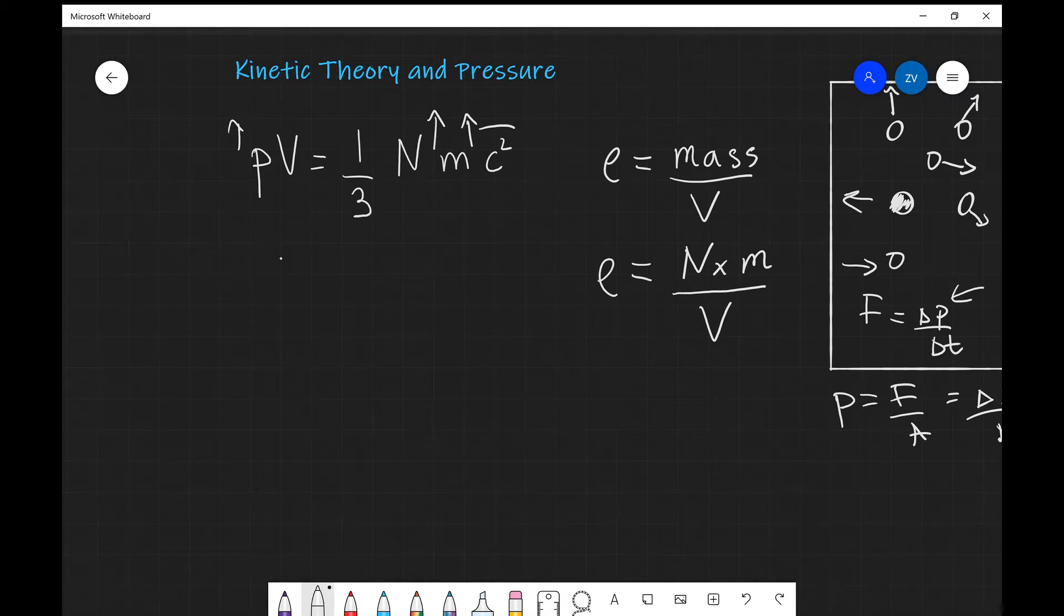Now what I'm going to do is just rearrange for V, so V is going to equal N times m divided by the density, and then what I'm going to do is substitute this back into the original equation.